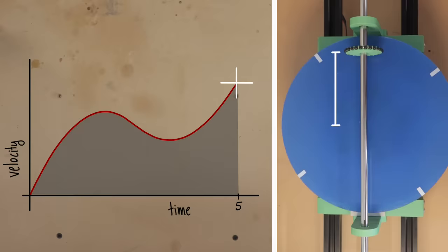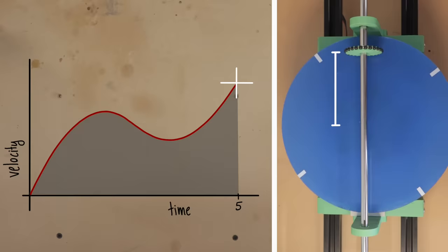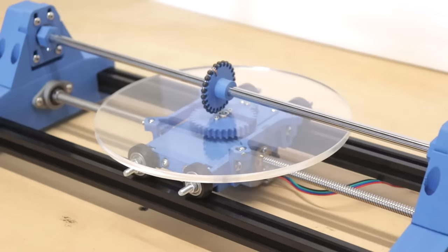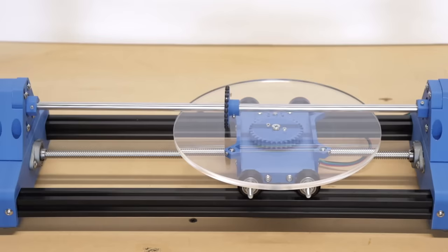With this understanding, we can finally take a look at the entire integrator. Here we see the time disk and the follower connected to the output shaft. In this machine, for the sake of visibility and simplicity, I've made the follower stationary and the table is the portion of the machine that moves back and forth, but it still works in the same way.